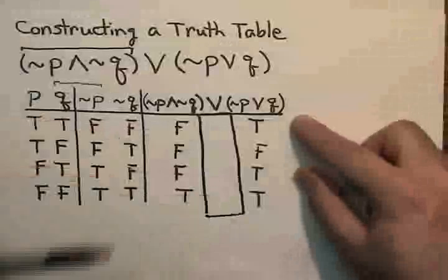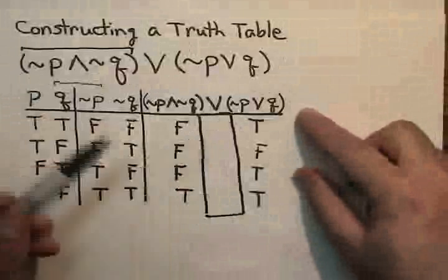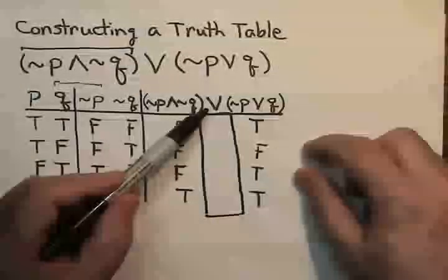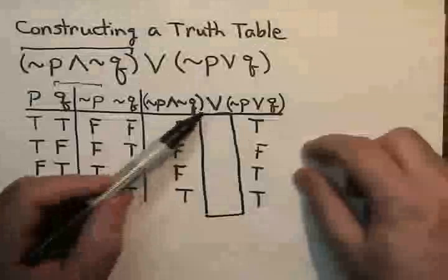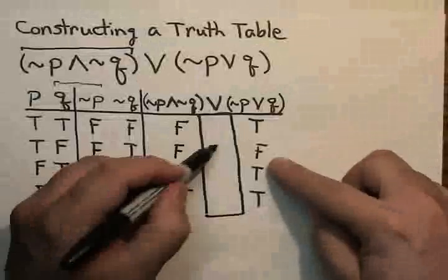The truth values for the entire disjunction will be inside of here. And remember, a disjunction has a property that it is only false if both component statements are false. And that would be here.